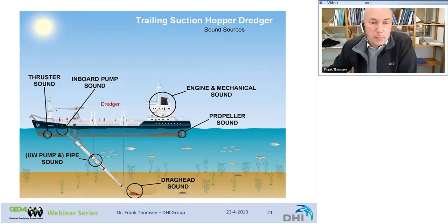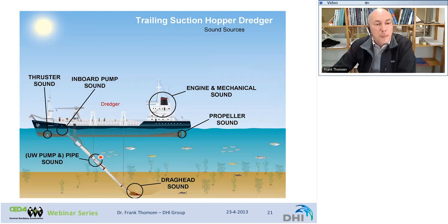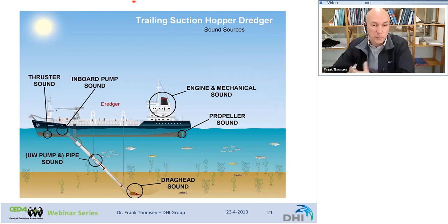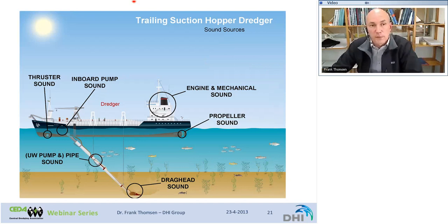A trailing suction hopper dredger — used in aggregate extraction, for example — uses a drag head to suck gravel into the ship. Sound can come from the drag head, the pump and pipe, thrusters, the inboard pump, and the propeller. In fact, the propeller is the main sound source, which is why dredgers can be compared to medium-sized ships when it comes to sound emissions.